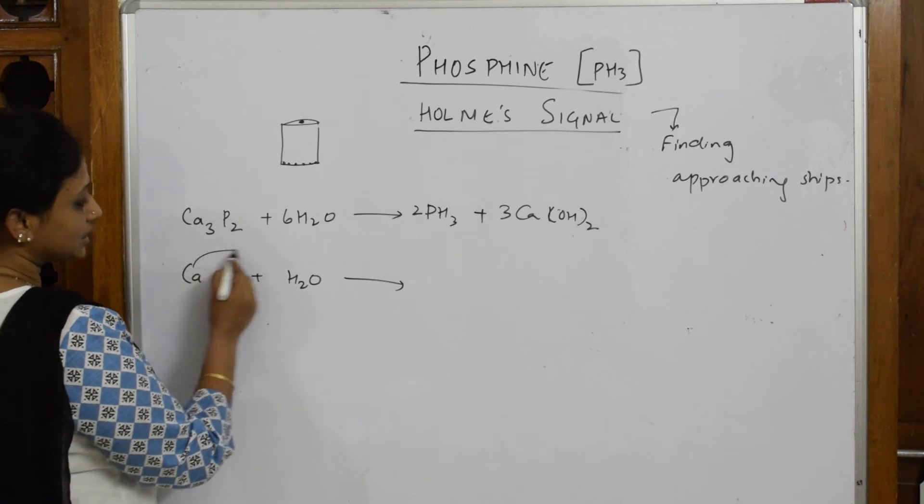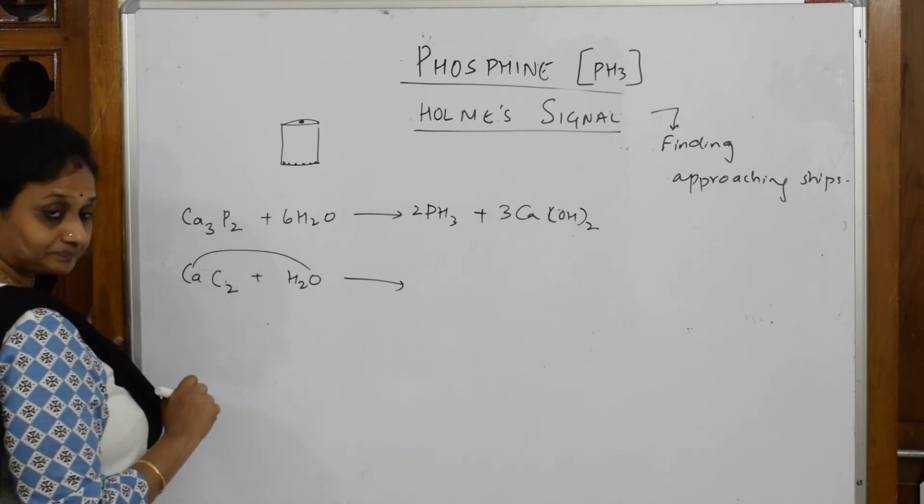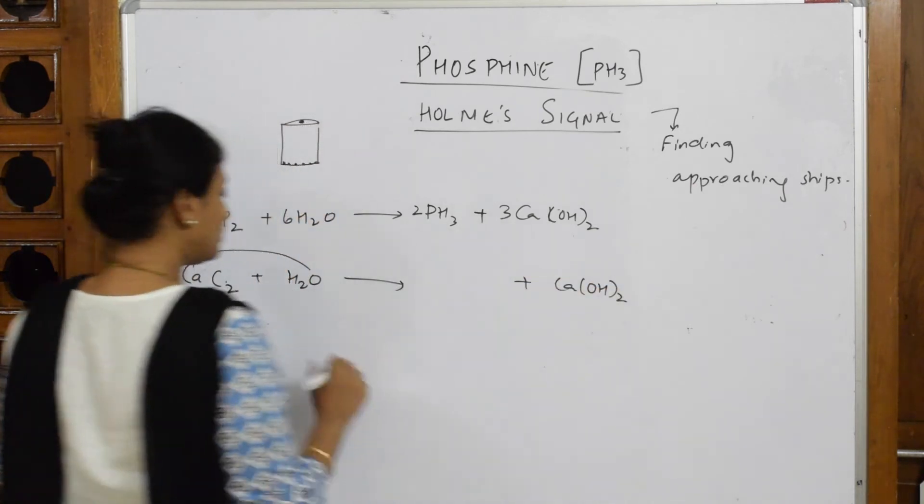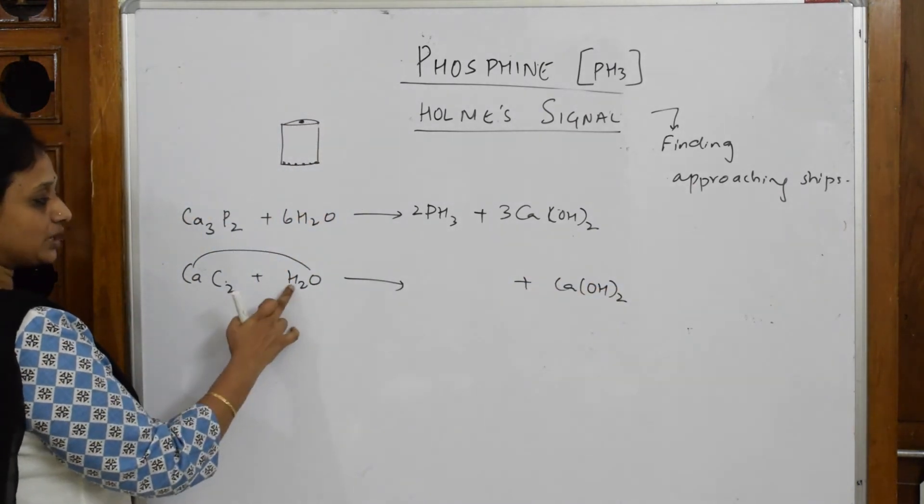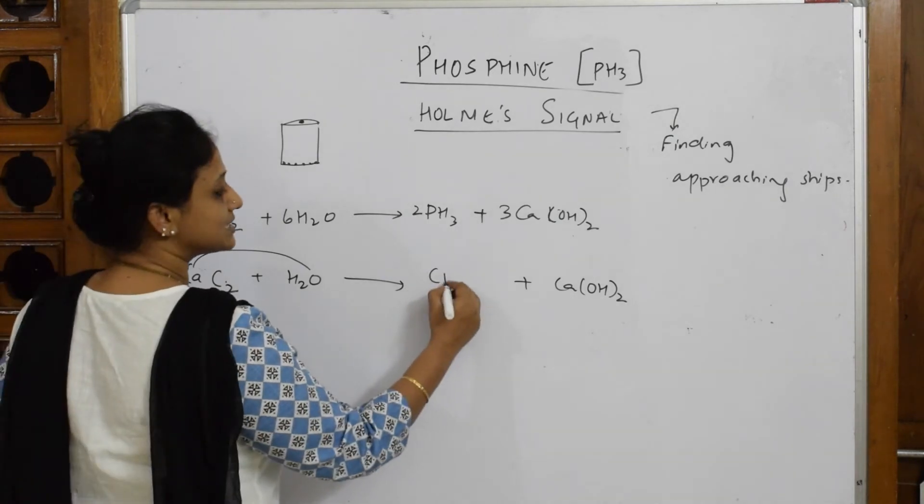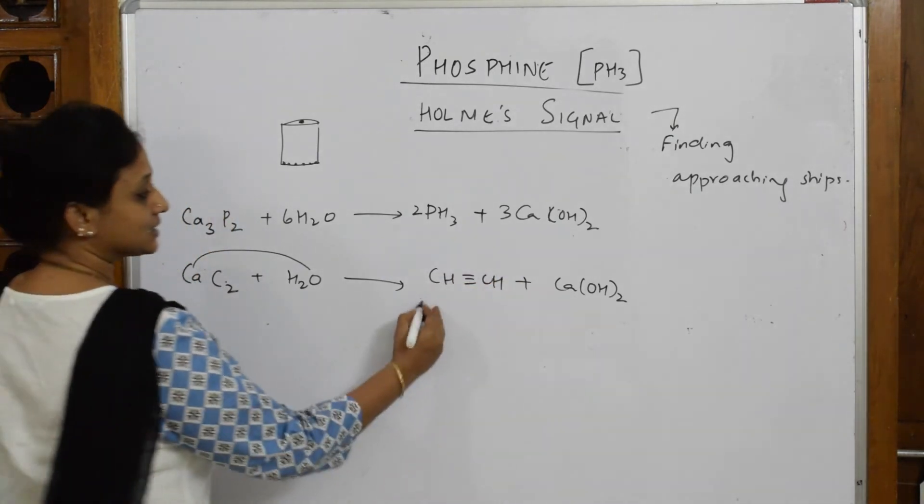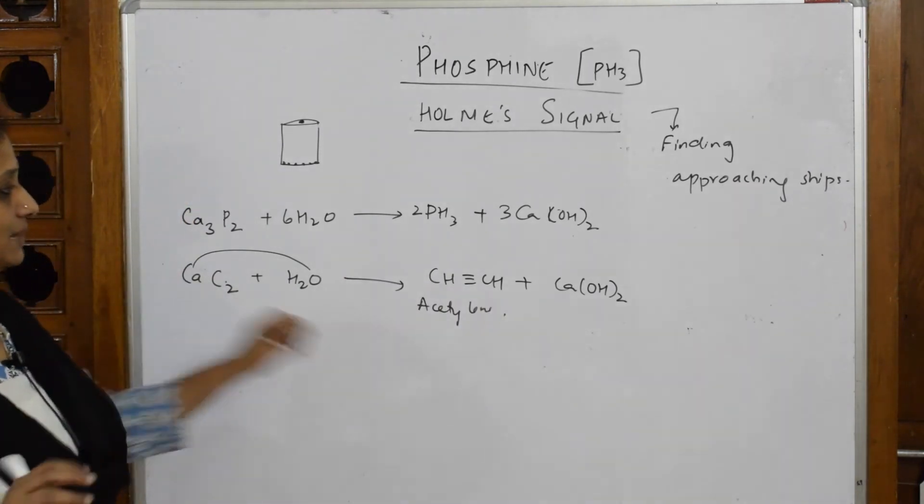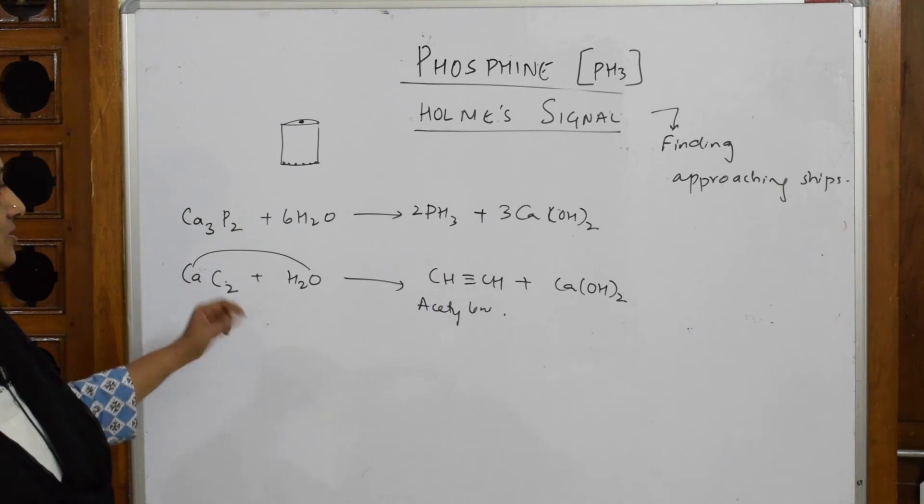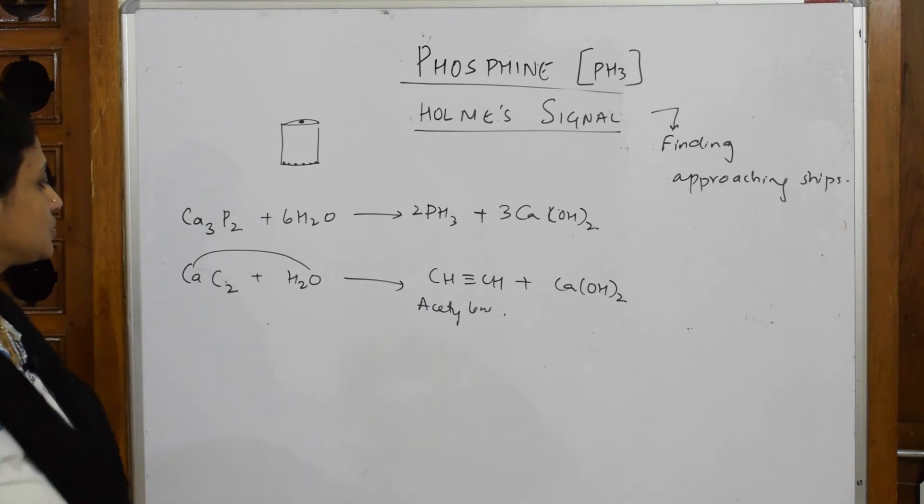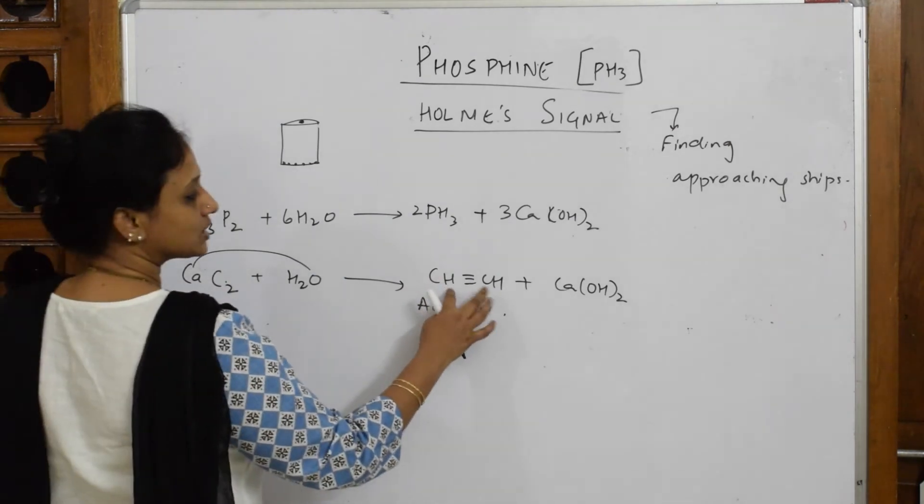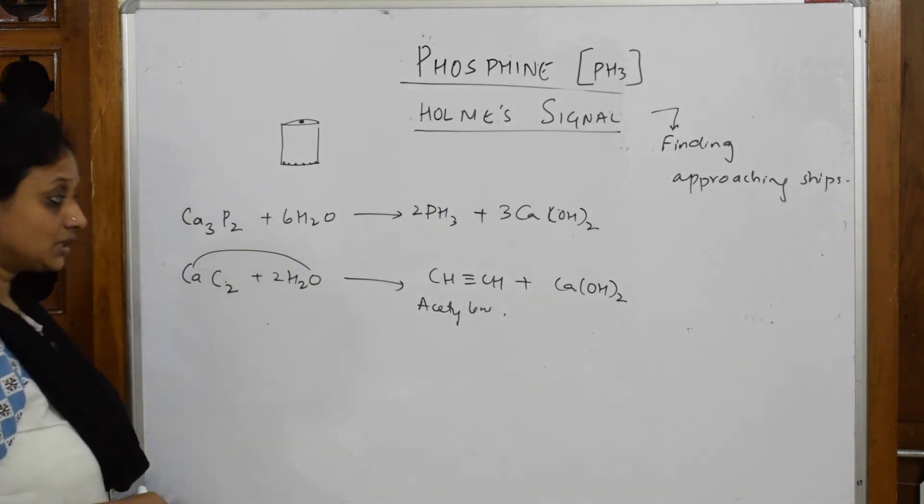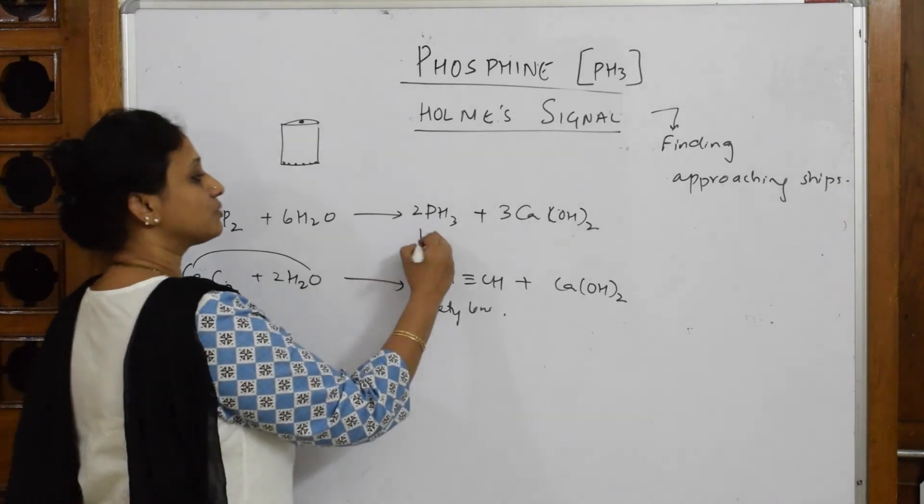Same thing when I take calcium carbide - calcium comes out as calcium hydroxide, same as above, and the leftover C2H2 is nothing but acetylene. Let's see: calcium is balanced, acetylene two carbons are balanced, hydrogen - one two here, two two to the four, so H2O. Oxygen is two, balanced. So now I'm going to get two important products: one is phosphine and one is acetylene.